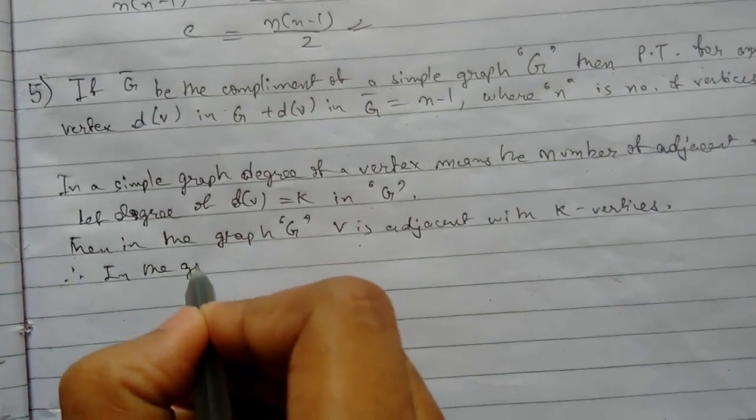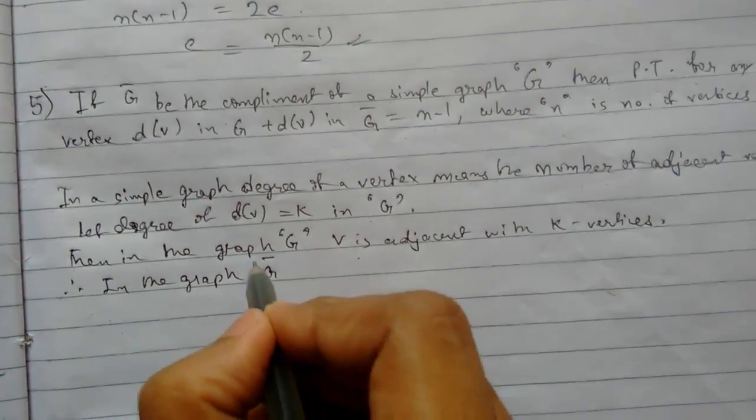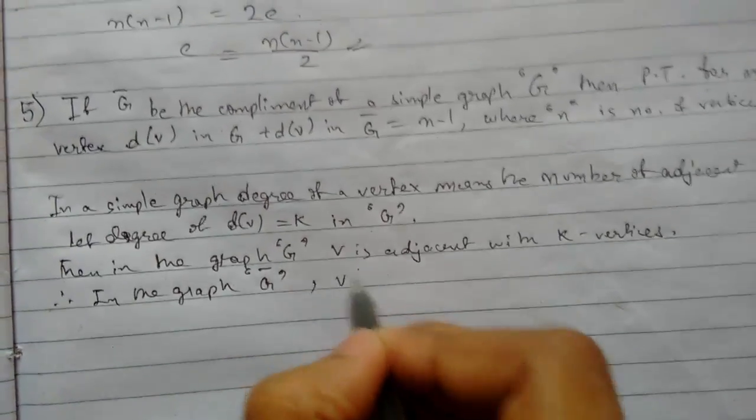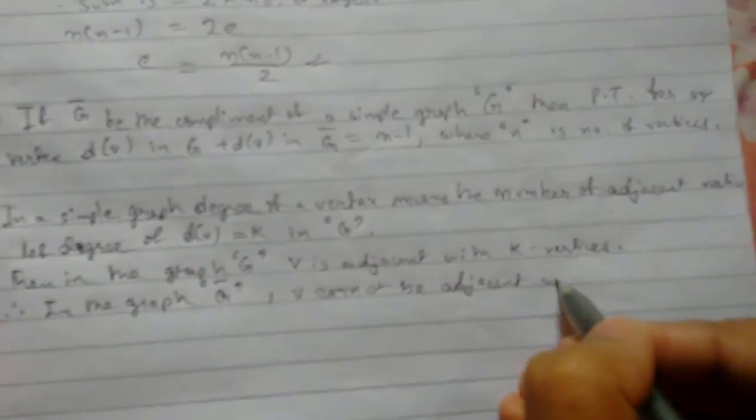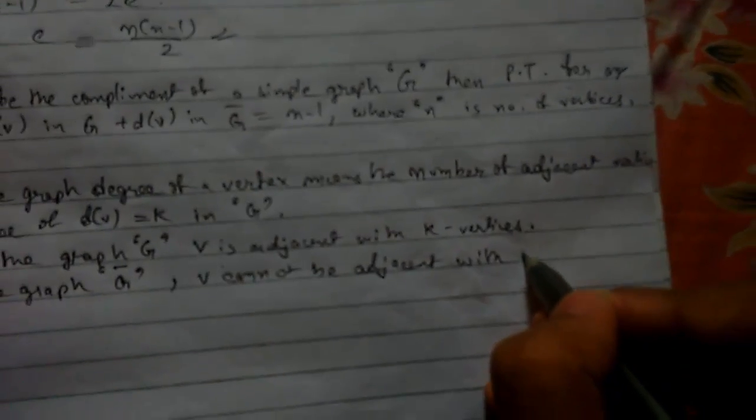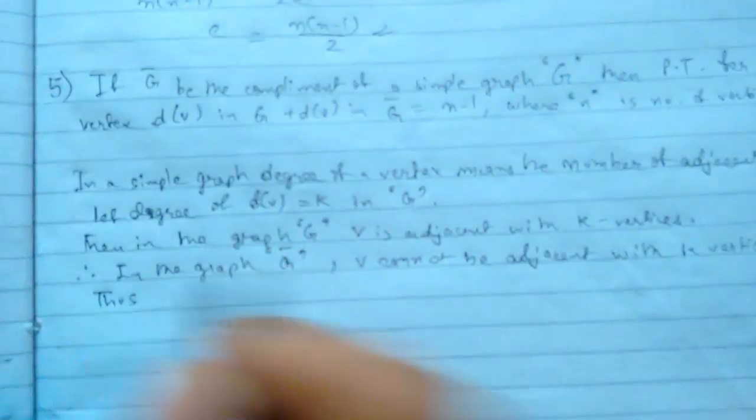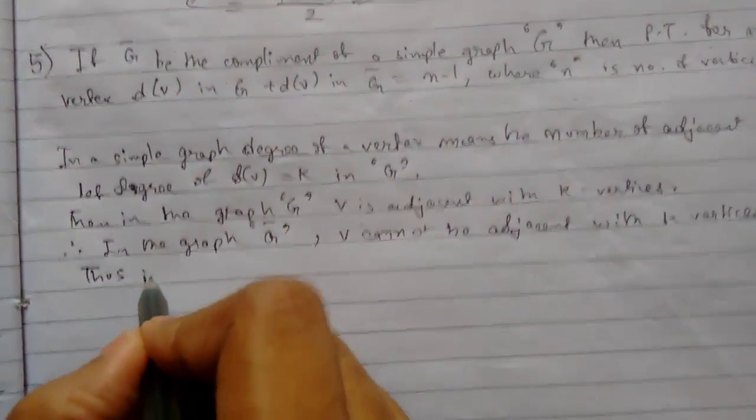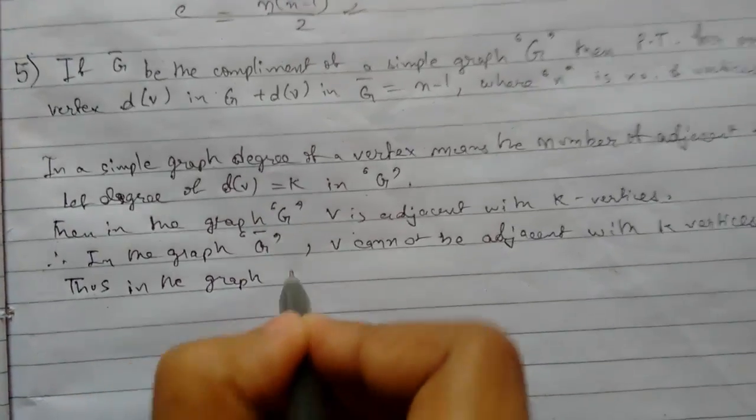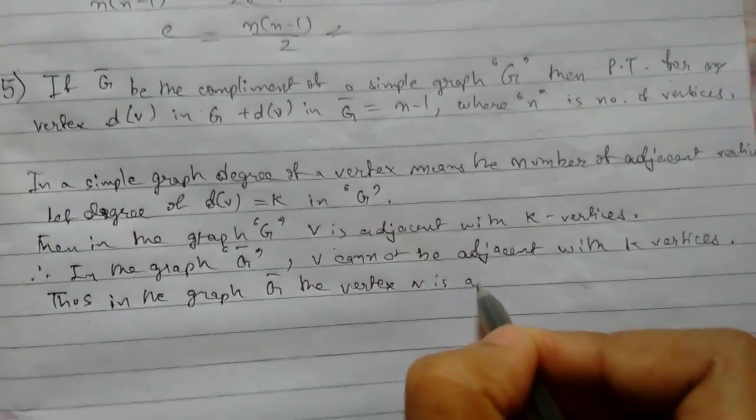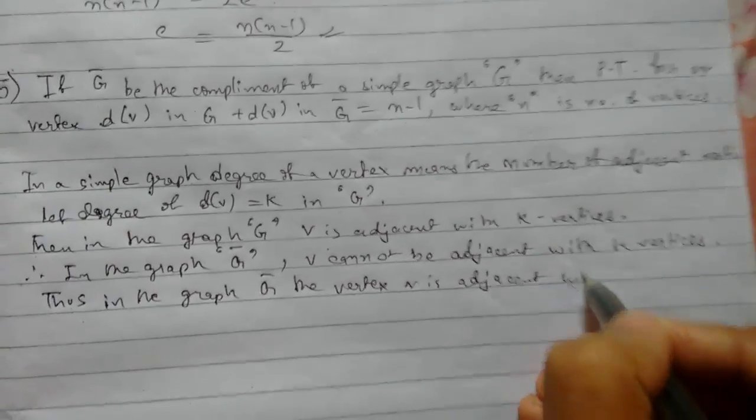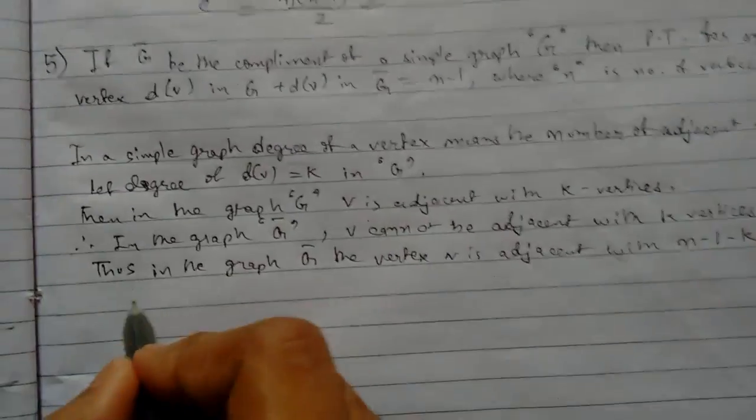Therefore, in the graph g bar, v cannot be adjacent with k vertices. Thus we say that in the graph g bar, the vertex v is adjacent with n minus 1 minus k vertices.